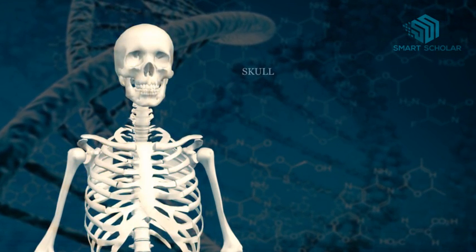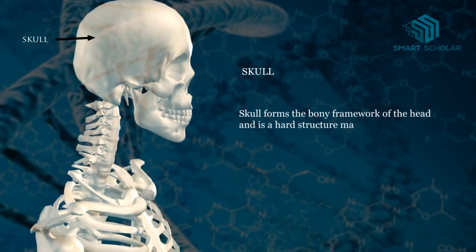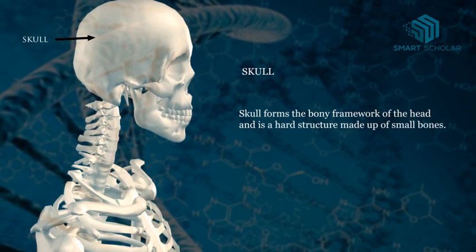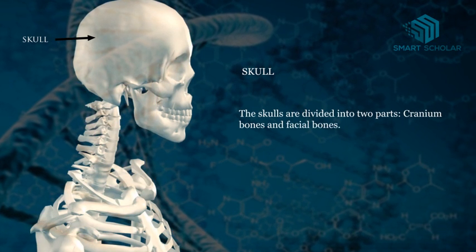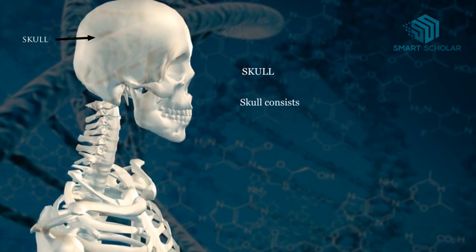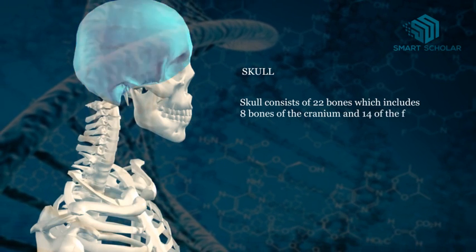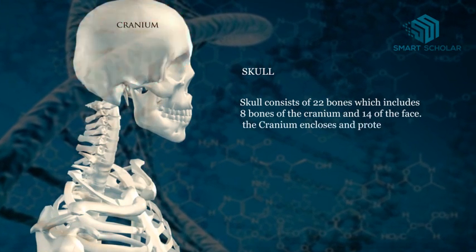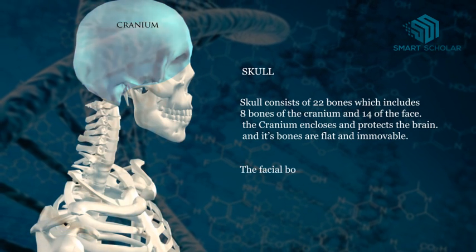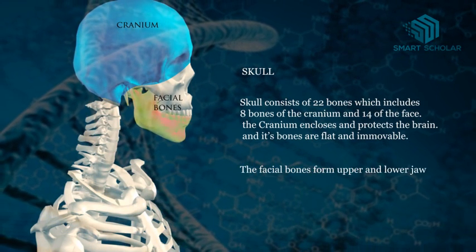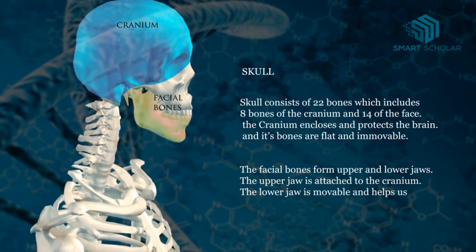Let's learn about the skull. The skull forms the framework of the head and is a hard structure made up of small bones. The skull is divided into two parts: cranium bones and facial bones. It consists of 22 bones, which include 8 bones of the cranium and 14 of the face. The cranium encloses and protects the brain and its bones are flat and immovable. The facial bones form the upper and lower jaws. The upper jaw is attached to the cranium and the lower jaw is movable and helps us to talk and eat.